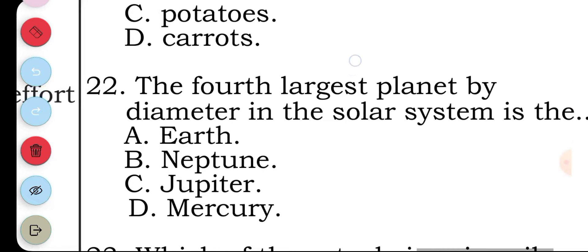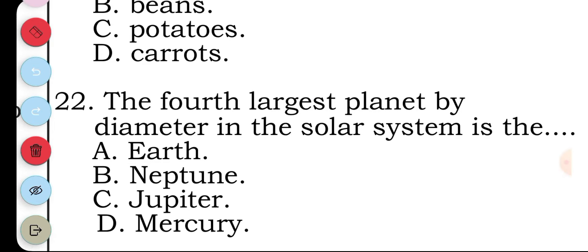Question twenty-two: the fourth largest planet by diameter in the solar system is. The answer is A.